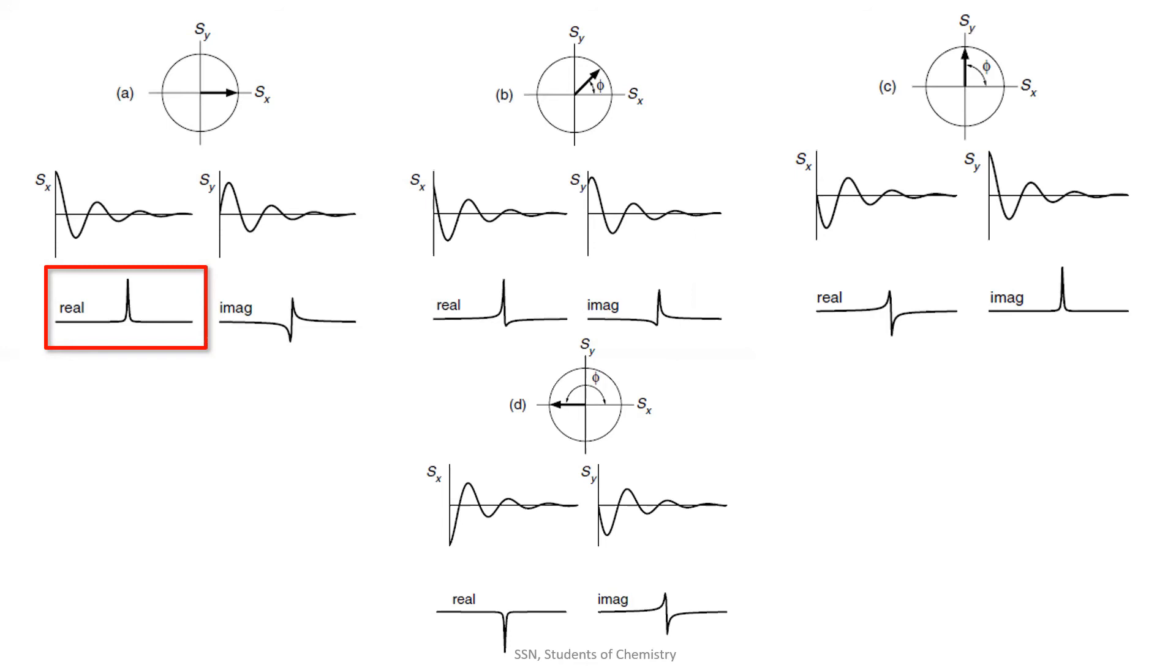Unfortunately, this won't be our only case when we record our spectrum. The magnetization can be present anywhere as it is revolving. We describe it as the signal is phase shifted or simply phase error.